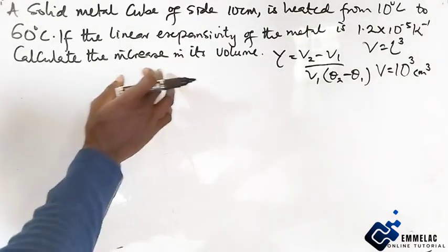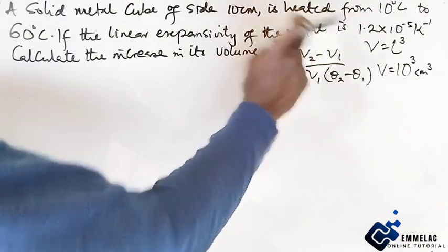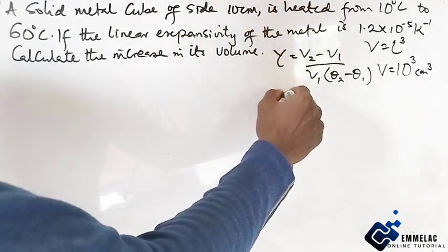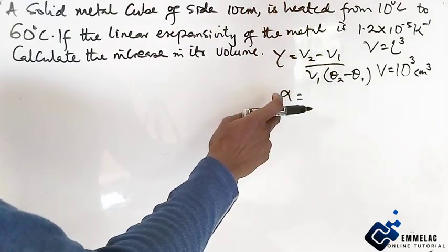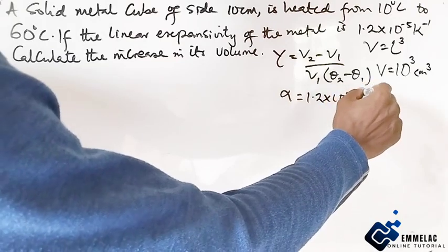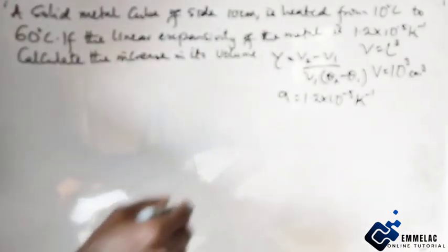Now that we've gotten the volume, we are asked to find the increase in volume. But we don't know this, but we are giving alpha, that is the linear expansivity, as 1.2 times 10 to the power minus 5 per kelvin.